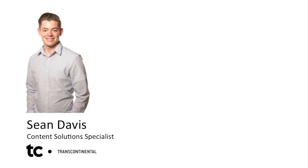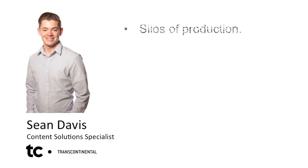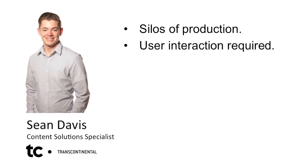What problem did you want to solve with automation? The first problem we were trying to solve was that some of our tools and solutions were siloed. These individual processes were already automated but they never interconnected. It still required user interaction to connect them, which had the potential for error.